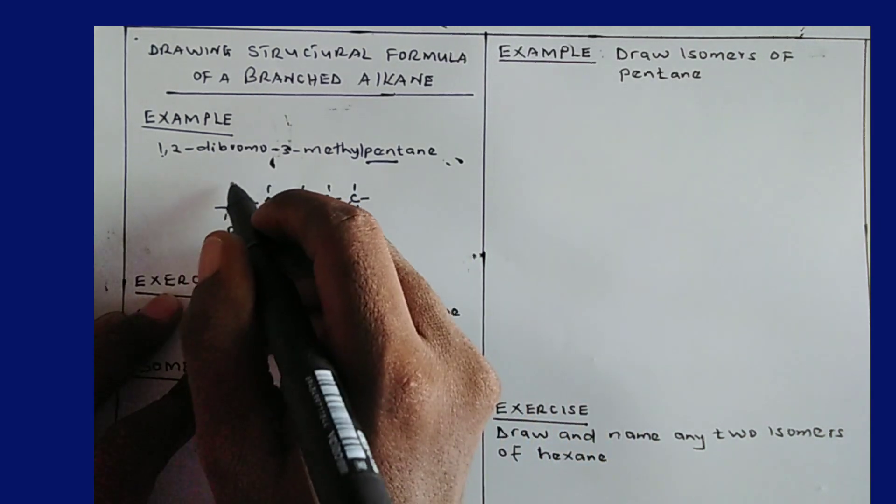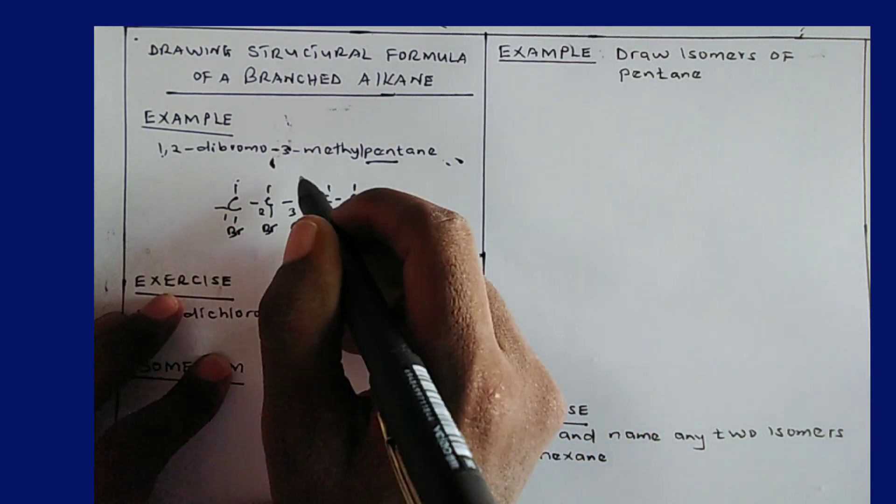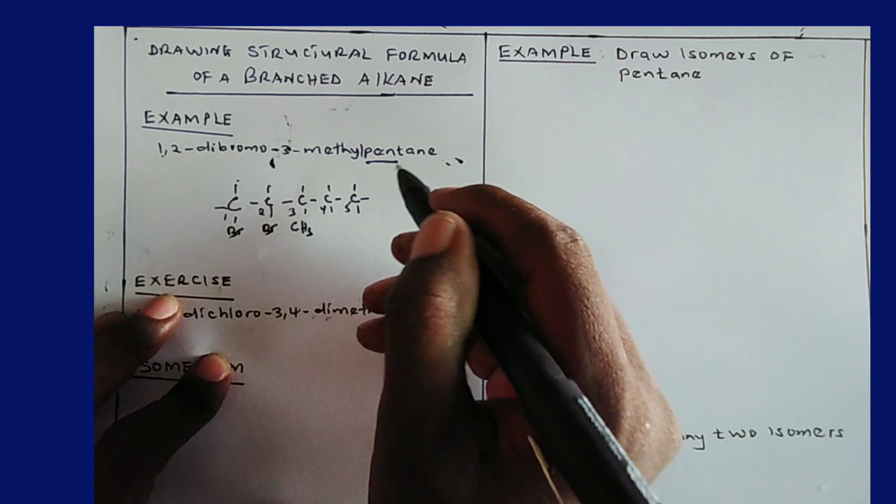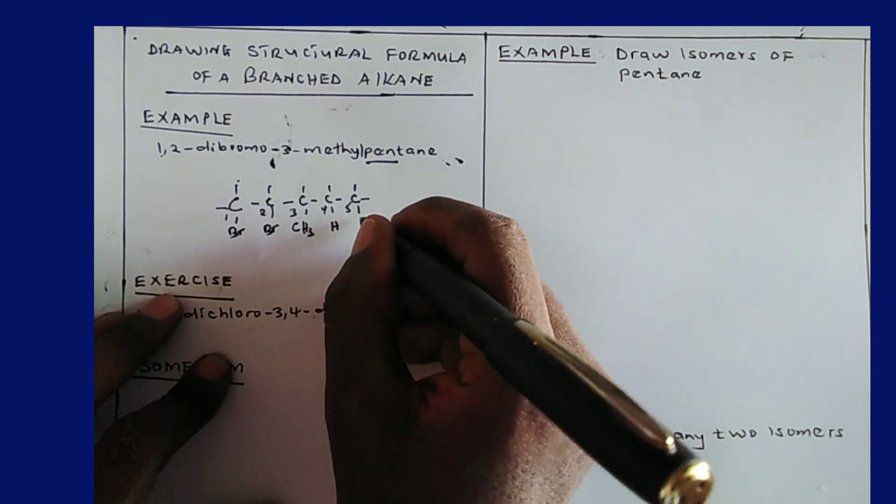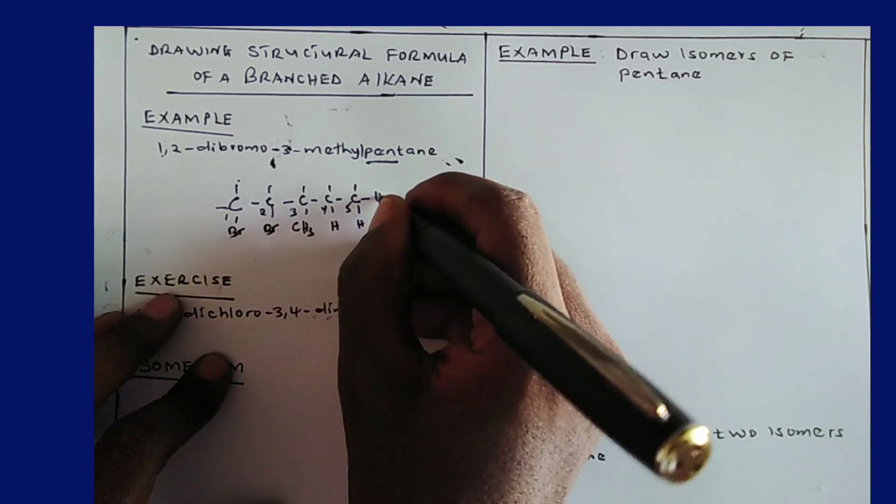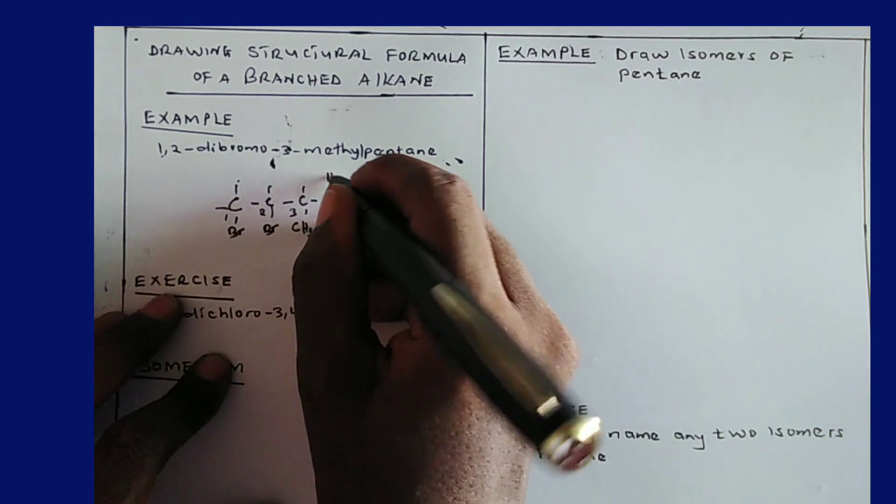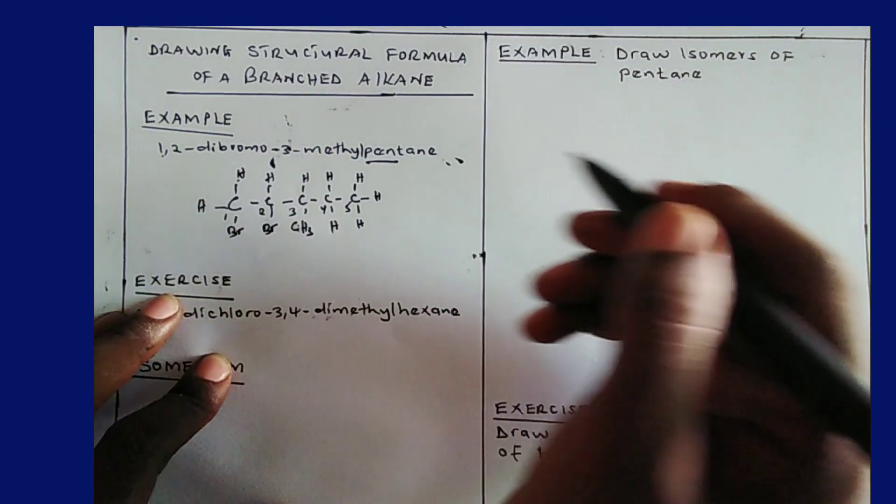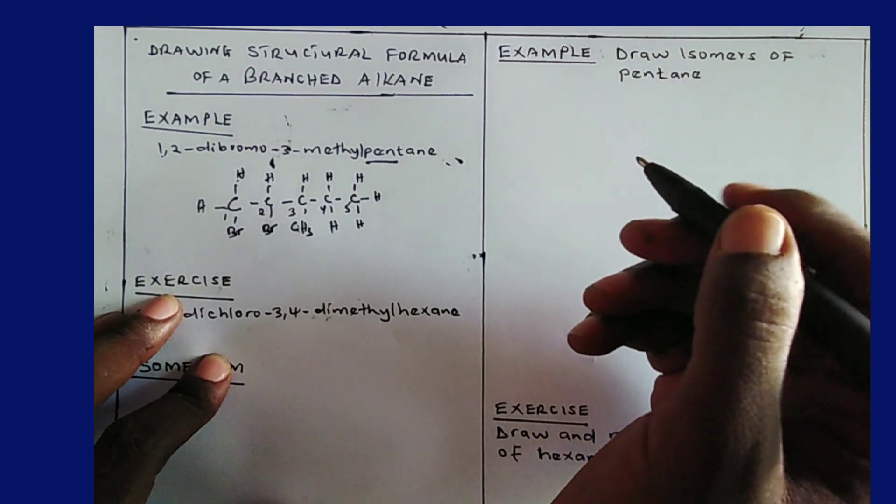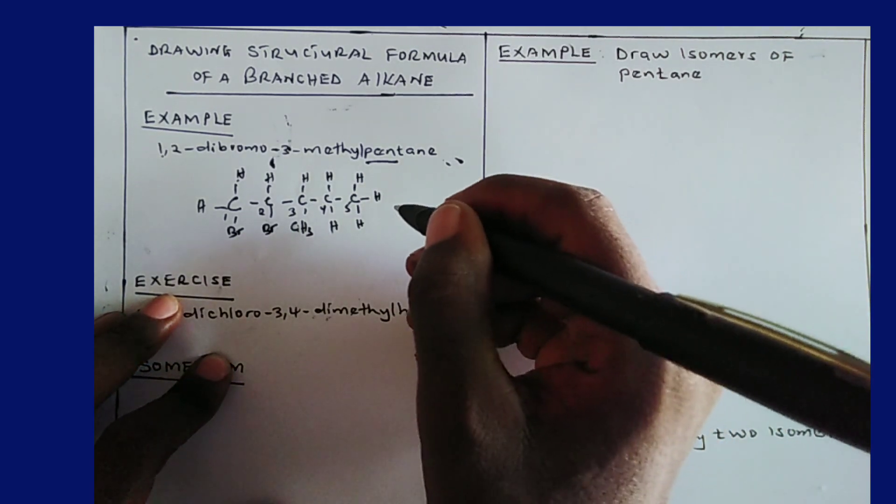Now these branches can also be placed here or here or here. Now then after placing the branches, the remaining bonds replace with hydrogen atoms. So that is the structural formula of 1,2-dibromo-3-methyl pentane.